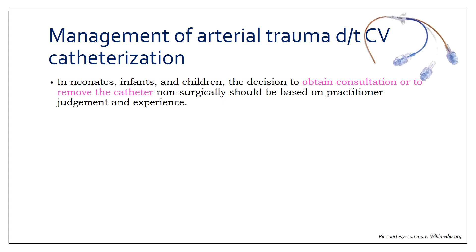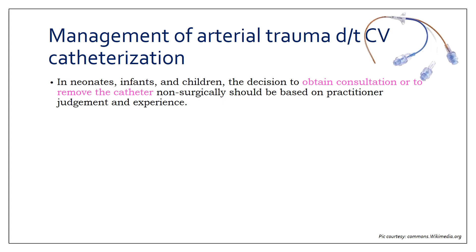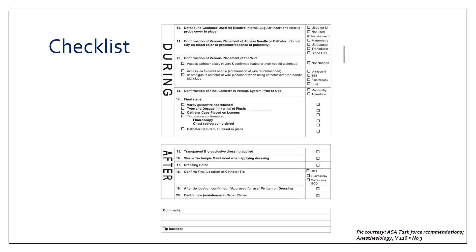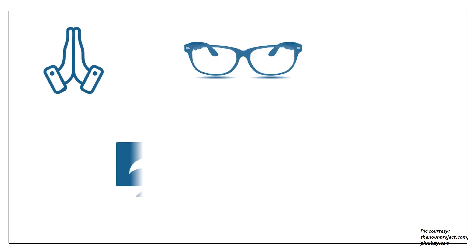In cases of inadvertent arterial puncture in neonates, infants, or children, the decision to obtain consultation from a general or vascular surgeon, or to remove the catheter non-surgically, should be based on your judgment, skill, and experience. There is also a useful checklist in the guidelines that all of us must use for insertion of a central line.